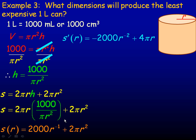To find the smallest surface area — the cheapest can — I differentiate the surface area and set it equal to zero. The derivative of 2000r⁻¹: bring the negative one down, so it becomes negative one times 2000, giving −2000r⁻². For the 2πr² term, bring the two down to give 4πr. Setting the derivative equal to zero gives −2000r⁻² + 4πr = 0.